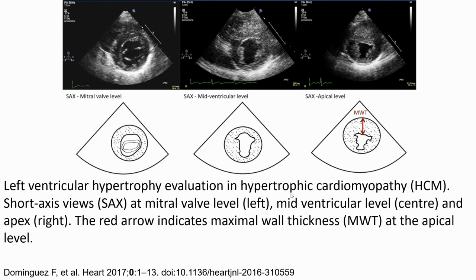This is the image of left ventricular hypertrophy evaluation in hypertrophic cardiomyopathy. Short axis view at mitral valve level is shown on the left image, mid-ventricular level in the center, and the apical level on the upper right image. The red arrow indicates maximal wall thickness at the basal level.